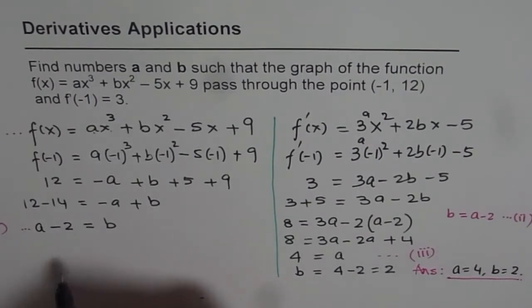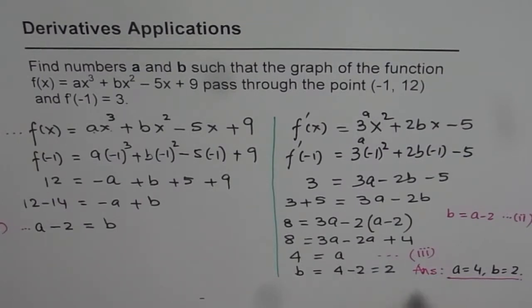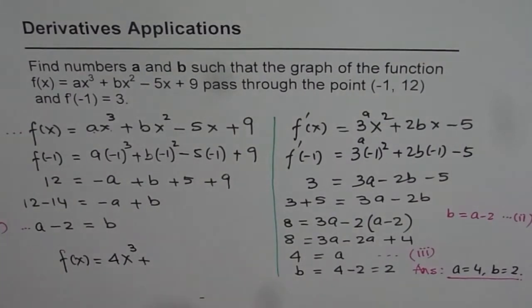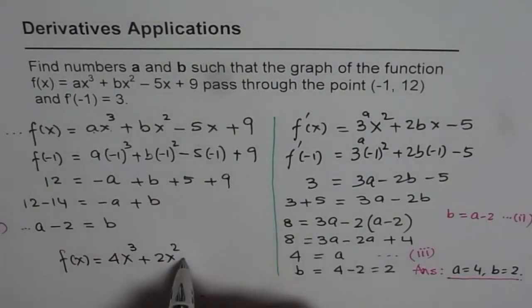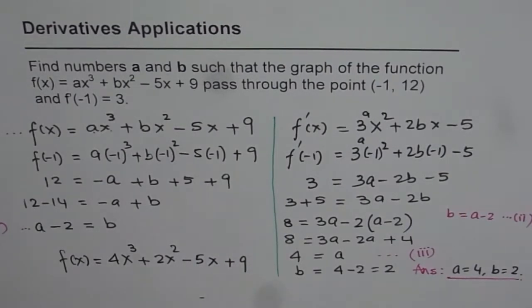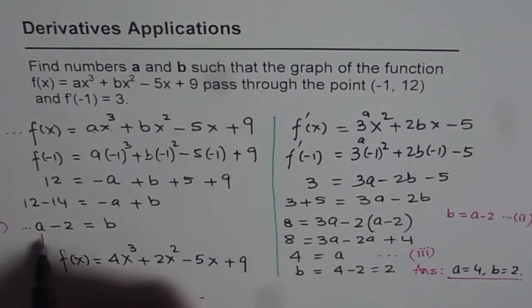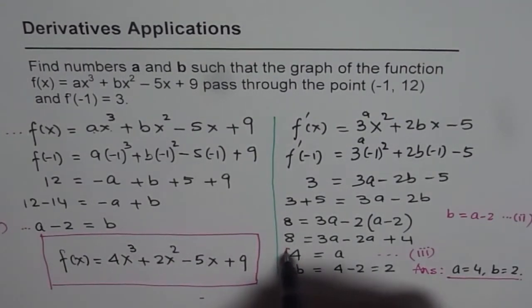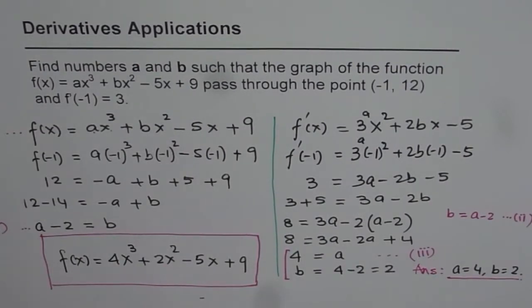Now, it is a good idea to write down the equation as such, with the values of a and b. So the equation which we came up with can now be written as f(x) equals a is 4 for us, 4x³, plus b is 2 for us, 2x², minus 5x plus 9. So that is the final answer, with a and b substituted in the equation. That's the actual answer.